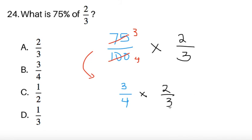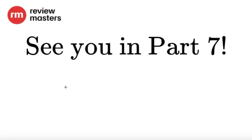We can use the concept of cancellation. We can cancel the 3. We can cancel the 2 and the 4, giving us 1 and 2. So it's just 1 half after all. 75% of 2 thirds is just 1 half, which gives us choice C. Hopefully you guys learned something new from this video. I'll see you in part 7. Bye-bye!